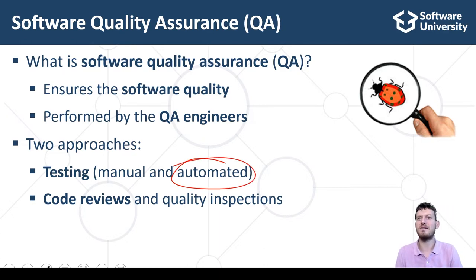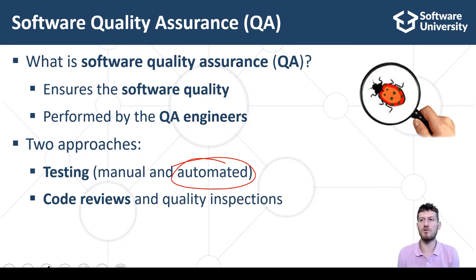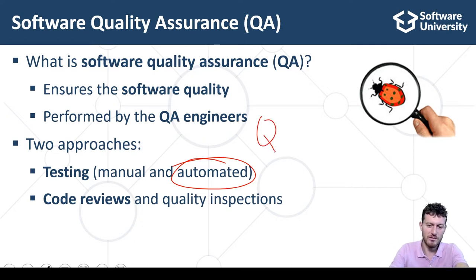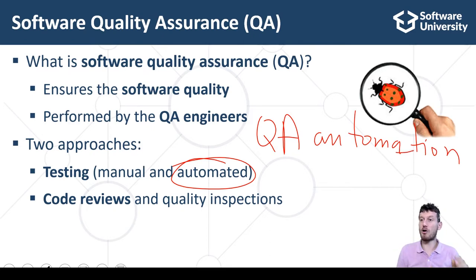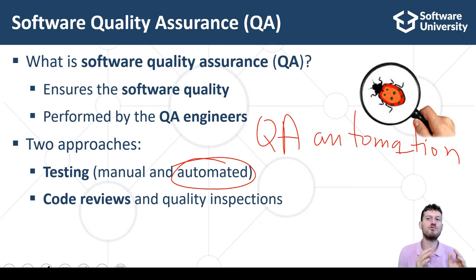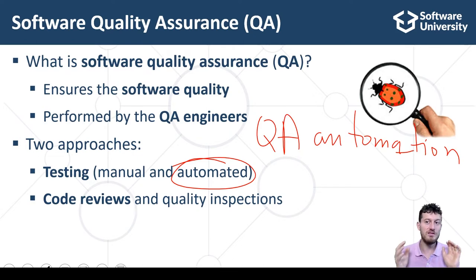Automated testing is done by scripts and programs which perform robotic checks of the software. Instead of clicking the UI controls, filling and submitting forms by hand, QA automation engineers record scripts and write programs to automate the software and to check whether the software behaves correctly without human intervention. Thus, QA automation experts are software development engineers in test.